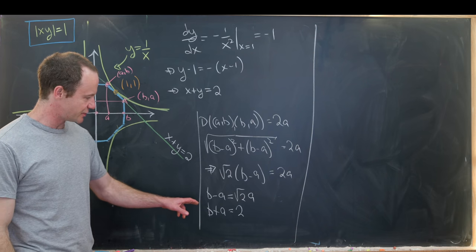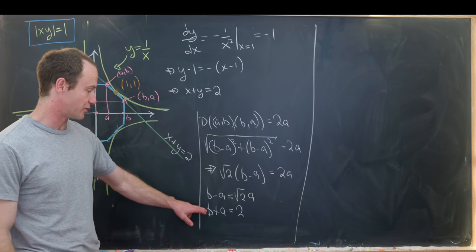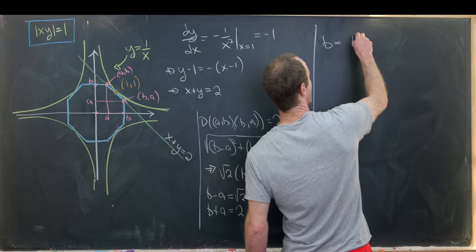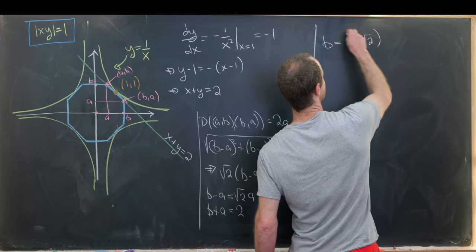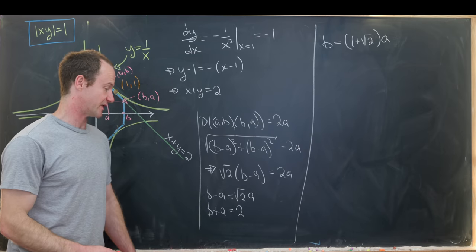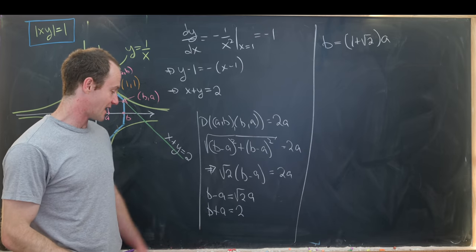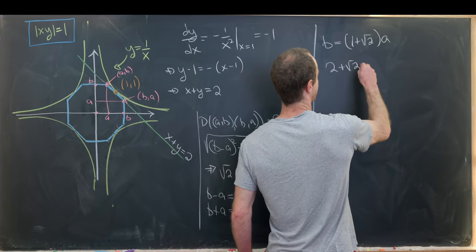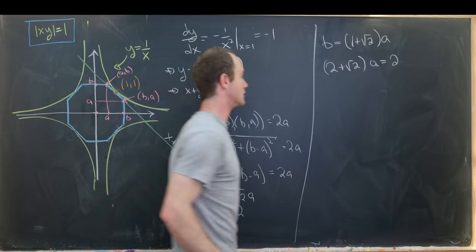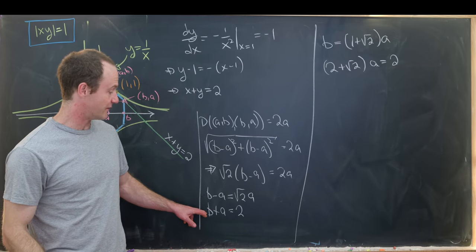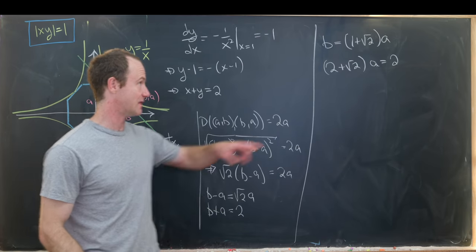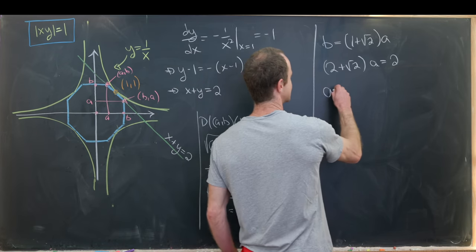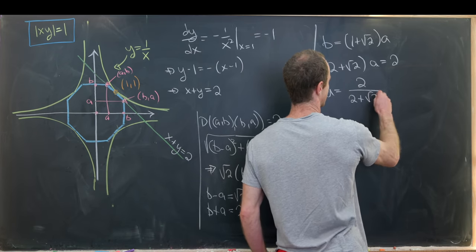So maybe the easiest thing to do is to solve this first equation for b and then plug that into the second equation. So let's notice that b is equal to 1 plus the square root of 2 times a. We get that after factoring things out. But now plugging that into the second equation we get 2 plus the square root of 2 times a equals 2. So that came from the fact that we've got another a to add in that turns this 1 into a 2. Okay but that tells us that a is equal to 2 over 2 plus the square root of 2.